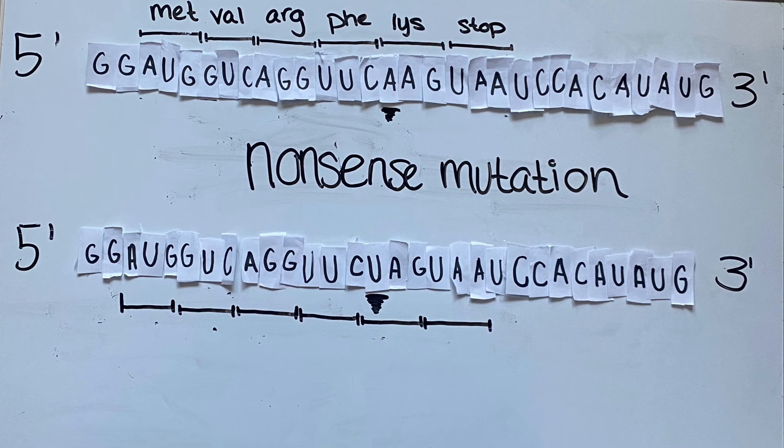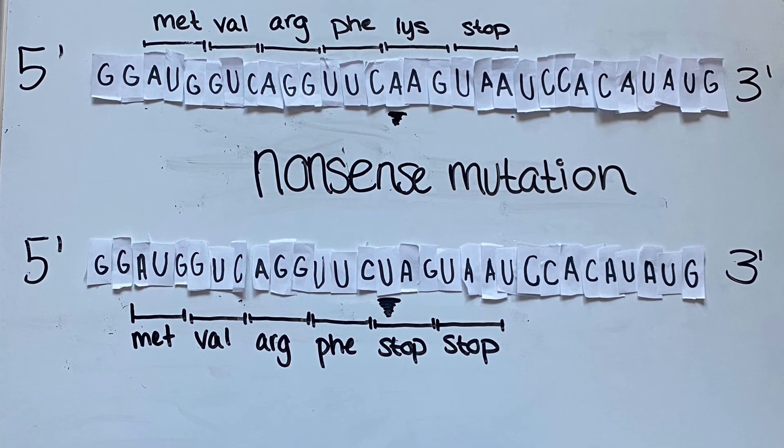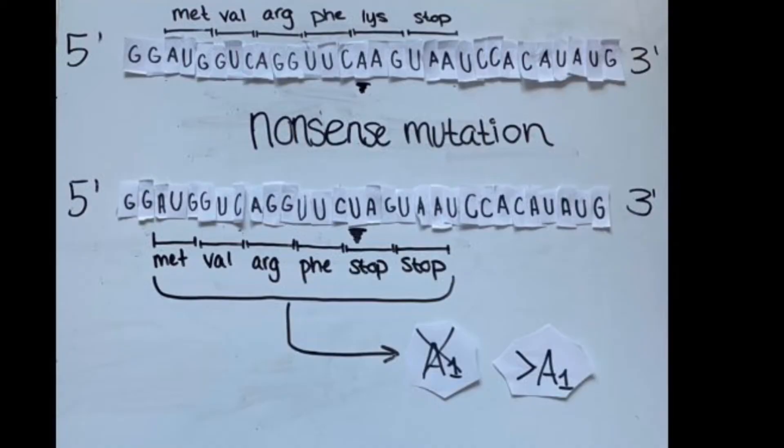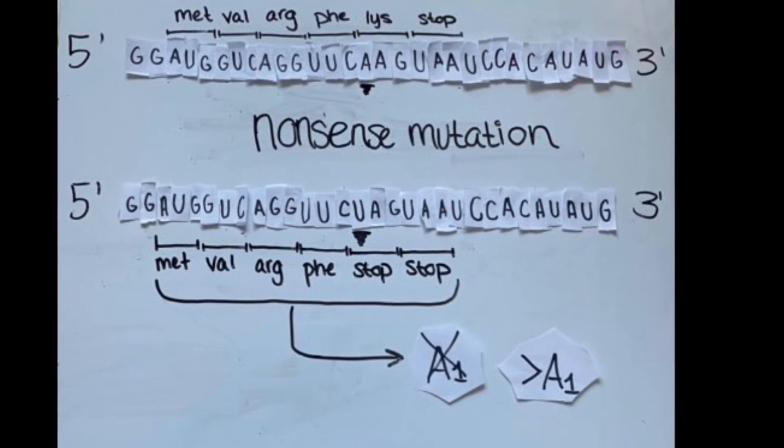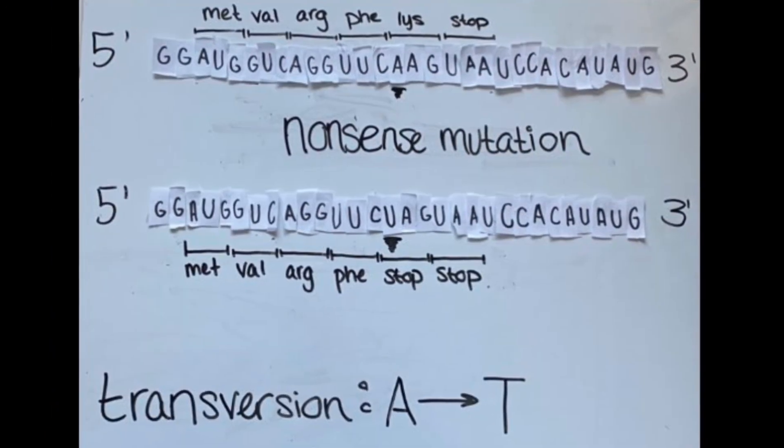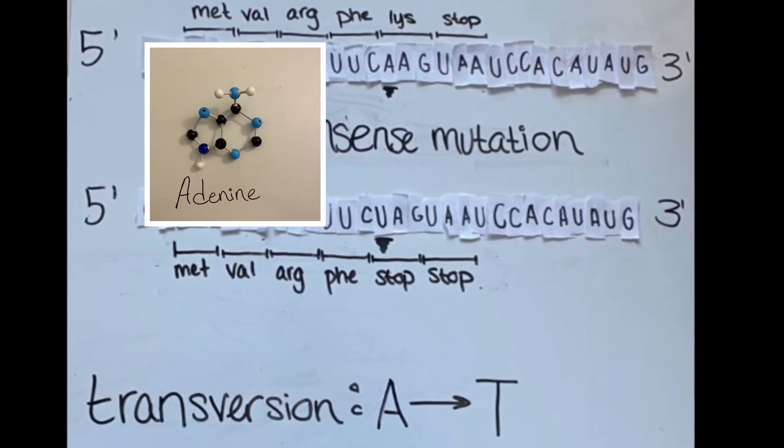A nonsense mutation will code for a stop codon that will either shorten the A1 protein or make it non-functional. This mutation would be a transversion of a purine to a pyrimidine.